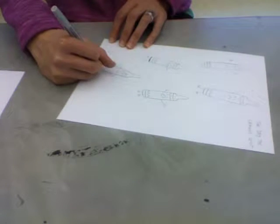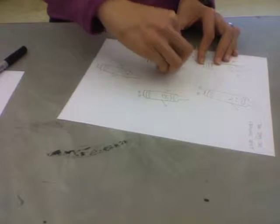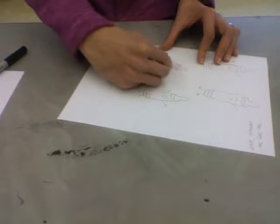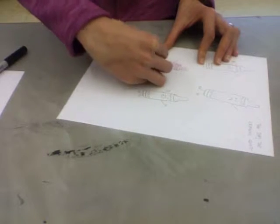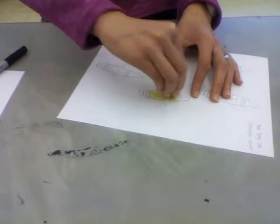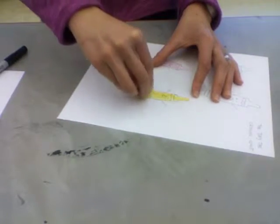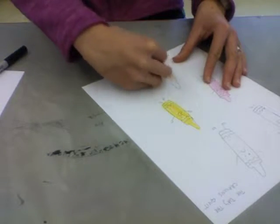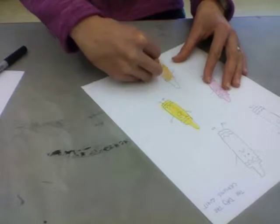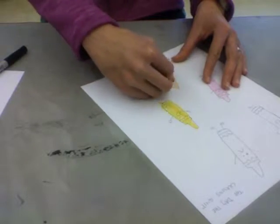Then we're going to color each of those crayons a different color with our crayons. Try to pick colors that you would like to draw things with because we're going to put things from each of those colors into the envelopes. Like the yellow envelope we might put a picture of a lemon, in the orange envelope maybe we'll put a picture of the sun.